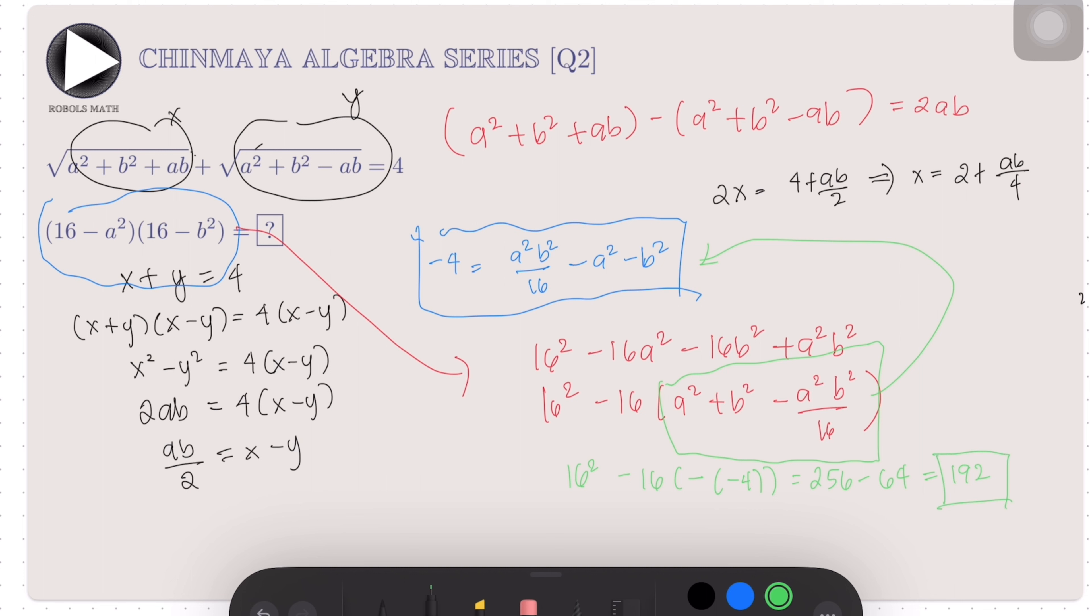Again, we use the conjugate method here because we have an expression involving the sum of two radicals. By using this method, we are able to remove the radicals without squaring the terms, which is what we commonly do for radical expressions. This method drastically improves the solution, shortening it by several magnitudes as compared to squaring the original equation. That's it for this video. Thank you.